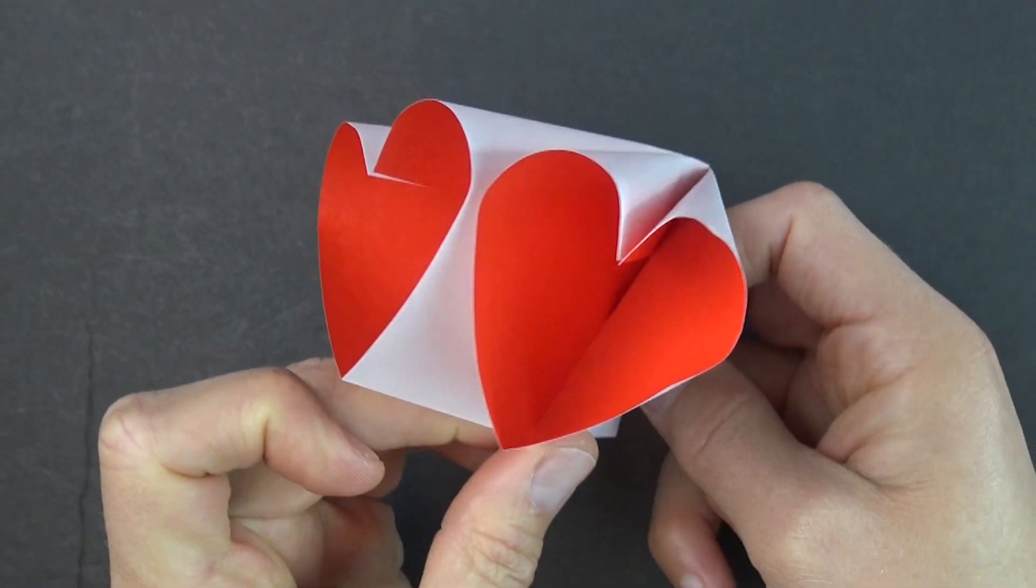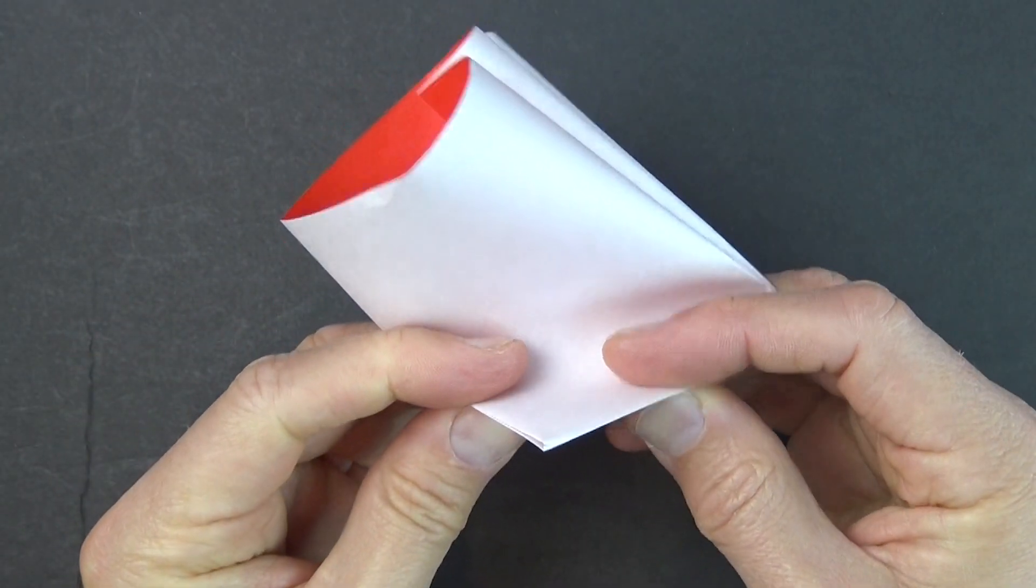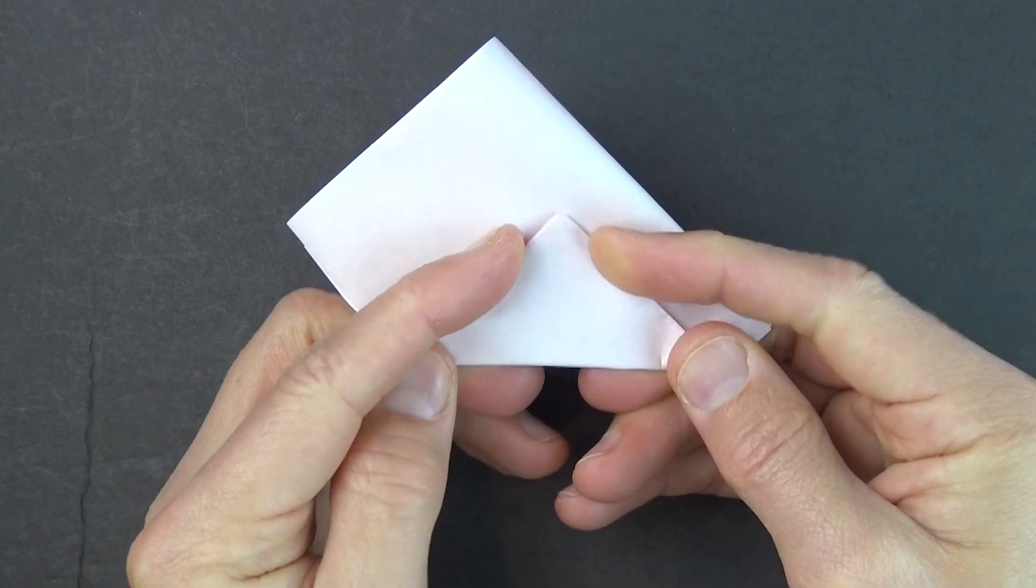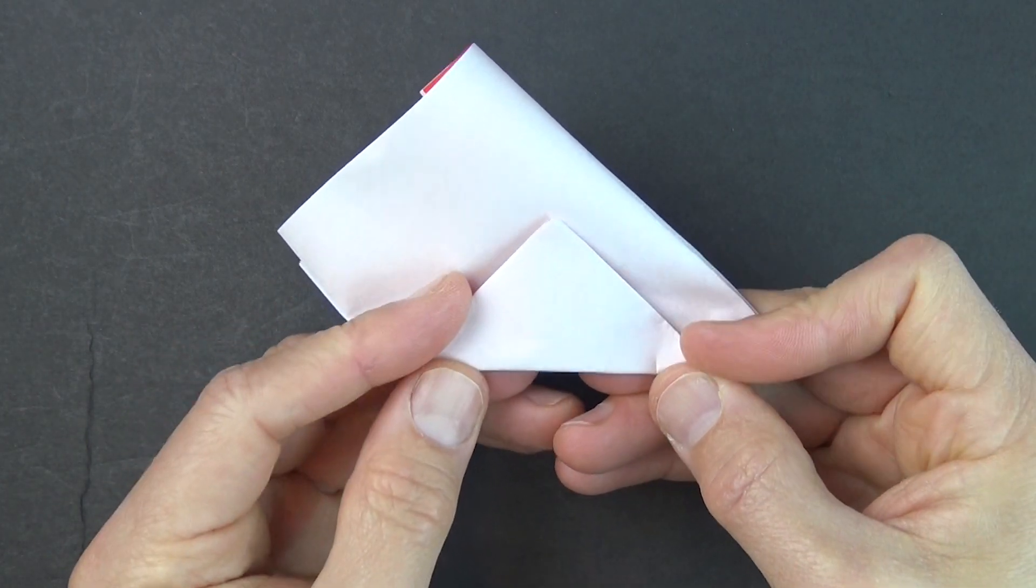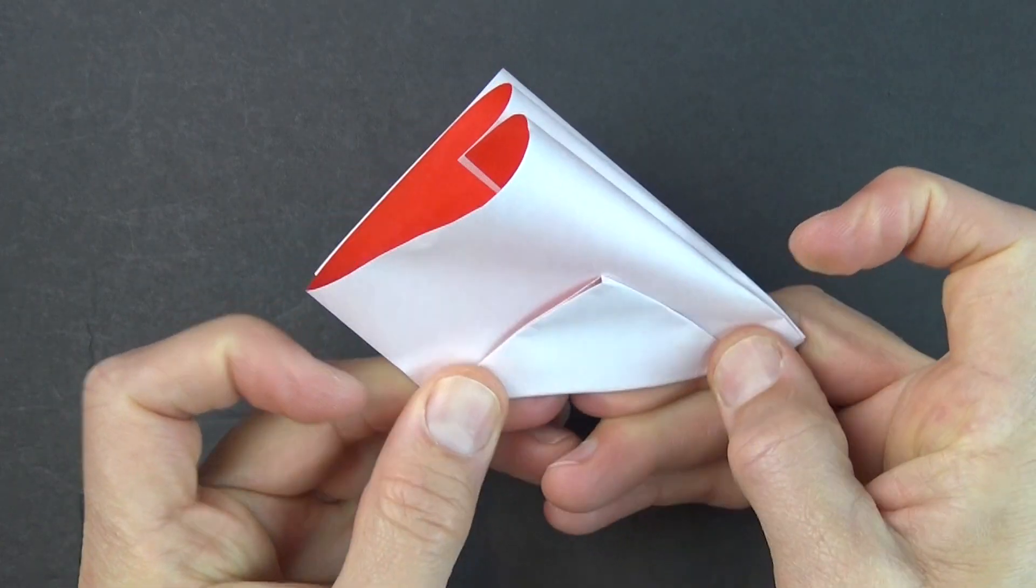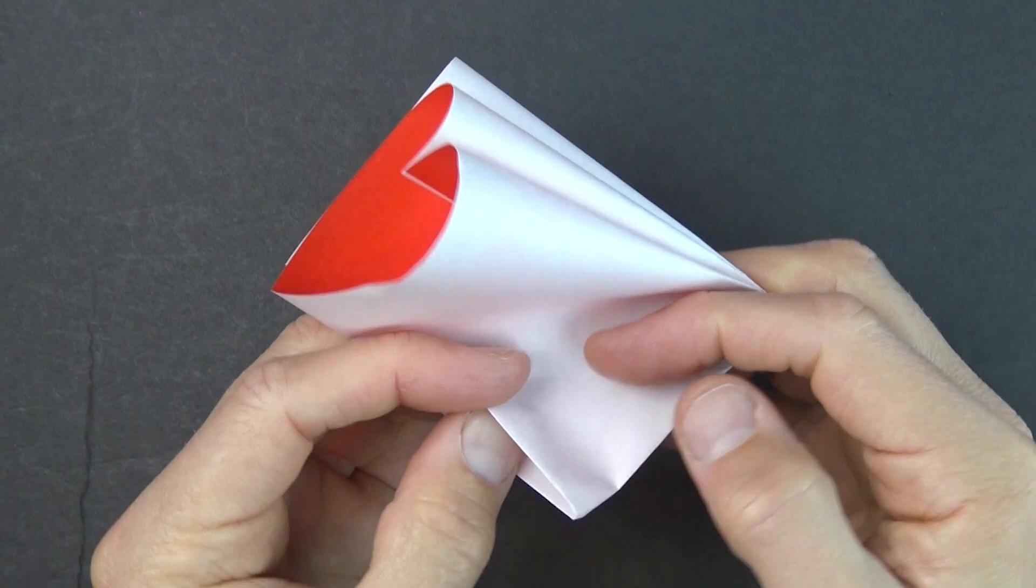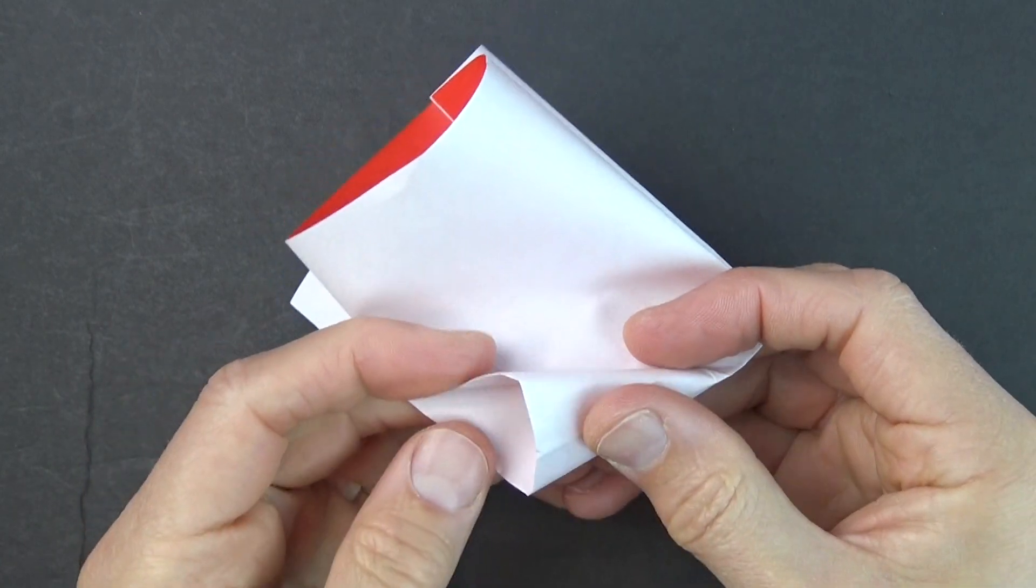Now, to make it stand, fold this flap up about like this. So this is a 45-90 triangle. And now, open the pocket and squash it.